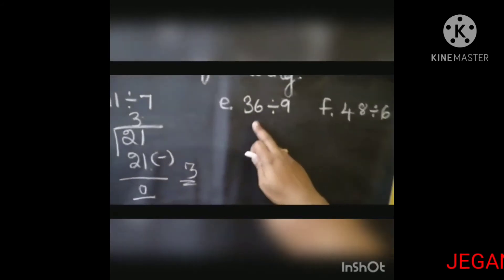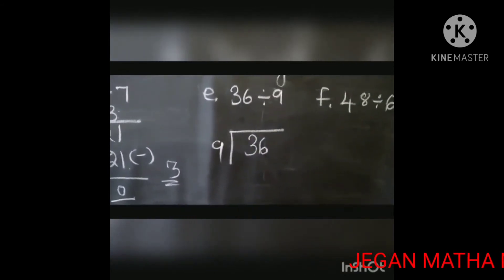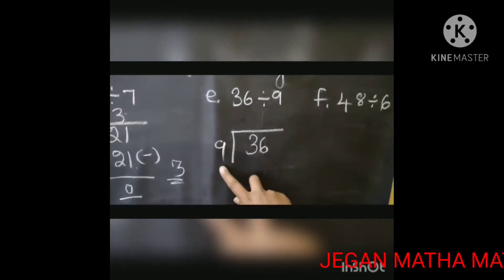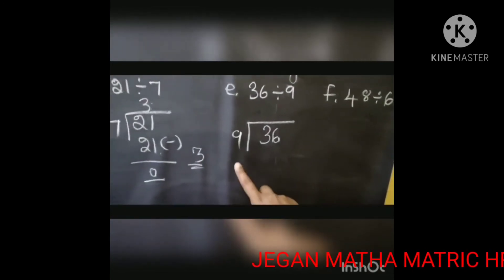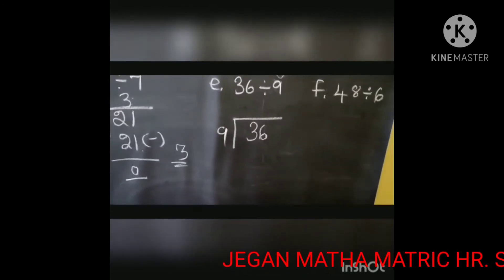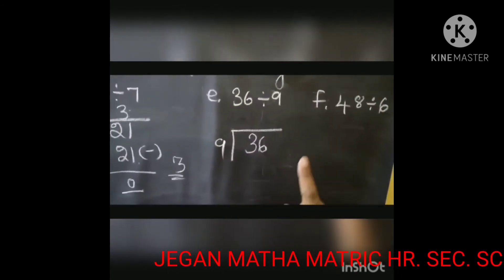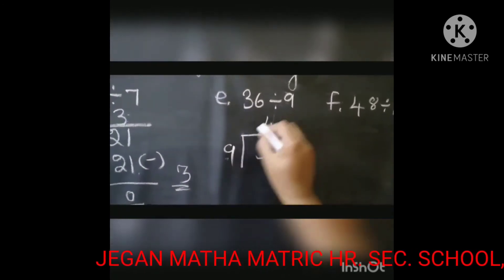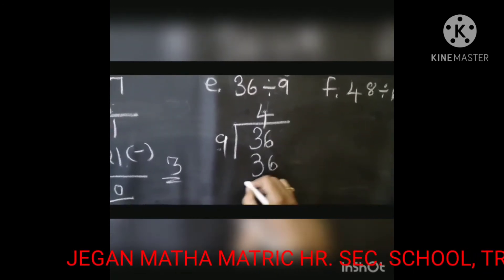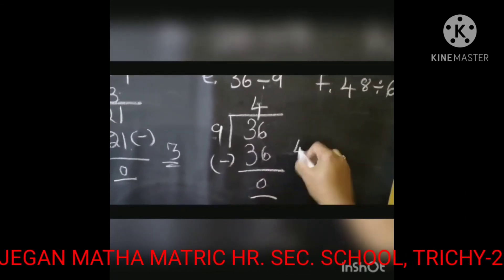Let's see the next one: 36 divided by 9. The same thing — you want to check the 9 table. The nearest number to 36 equal to 36. In the 9 table: 9 1 is 9, 9 2's are 18, 9 3's are 27, 9 4's are 36. The remainder is 0. The final answer is 4.